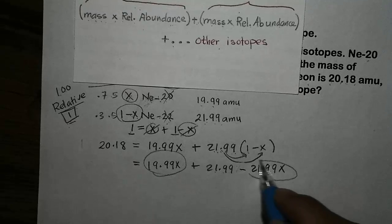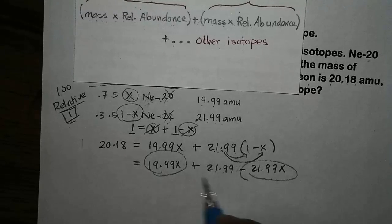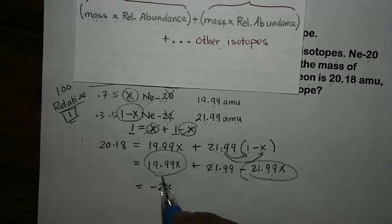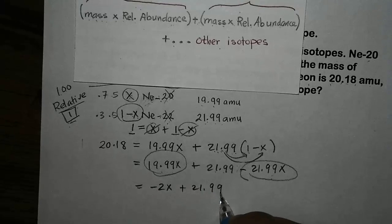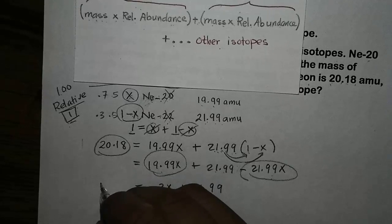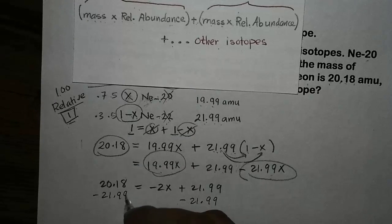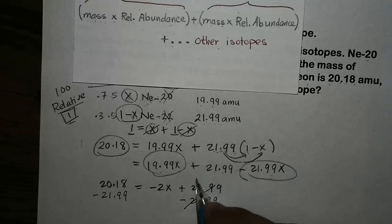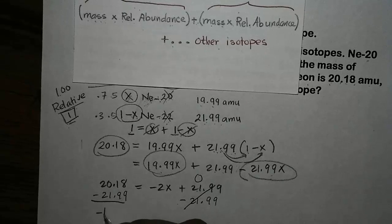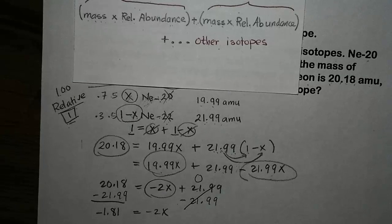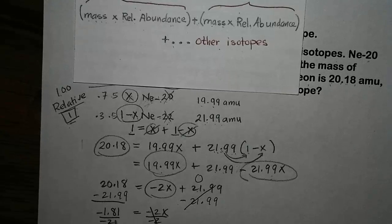Combining like terms, 19.99x minus 21.99x gives us negative 2x, plus 21.99. This equals the average atomic mass, 20.18. We can further simplify by subtracting 21.99 from both sides. Since 21.99 minus itself equals 0, we get negative 2x equals negative 0.181. Lastly, we solve for x by dividing both sides by negative 2. Negative 2 divided by negative 2 equals 1, so x equals 0.905.